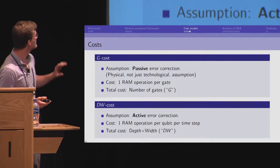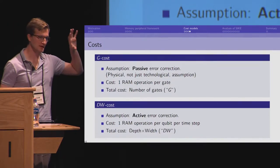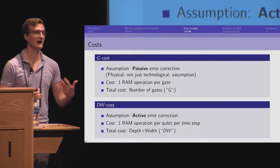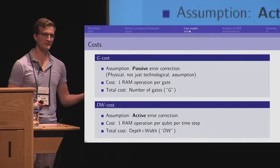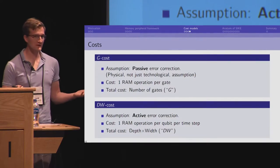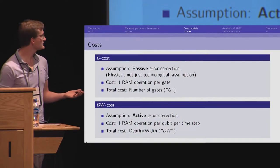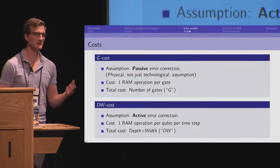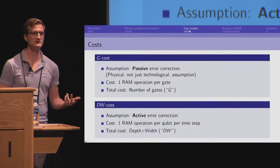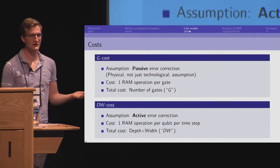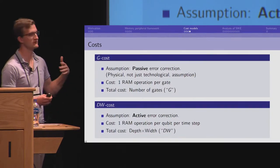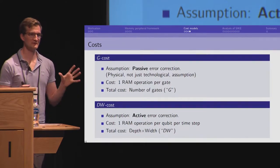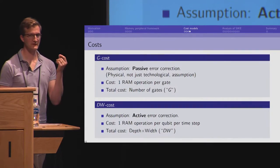So, if we want to take this g-cost and assume a passively corrected memory, we have to make a pretty strong assumption that our universe even allows this to happen. And that, at some point, we will figure out how to do it. But this might be possible. So, we can make this assumption. We don't need to spend any computation to preserve memory. We only need to spend computation to change it. And this is one RAM operation per gate is what this would be equivalent to. So, the total cost is just the number of gates. We called it g.